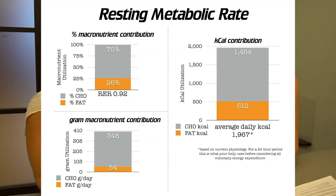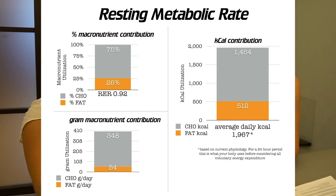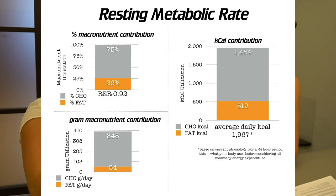Now for the resting metabolic data — everyone always wants to know. Your RER is 0.92, so 75% carb burning and 26% fat burning. I break it down into gram contribution — grams of carbs per day, grams of fat per day being utilized, and then calories and total daily calorie expenditure before any other activity. This is not a number you ever want to under-eat — it will change as body composition changes and you have more lean mass.